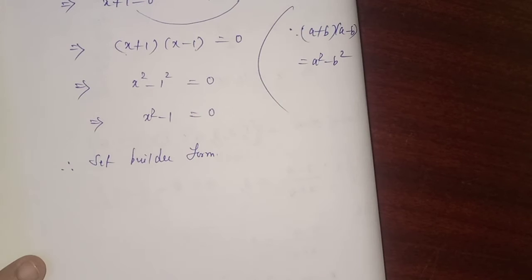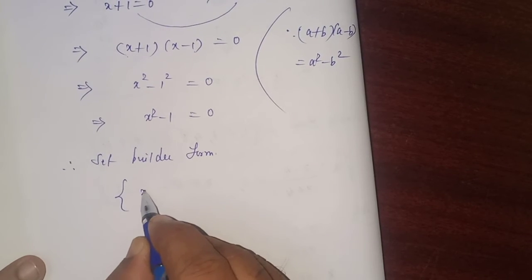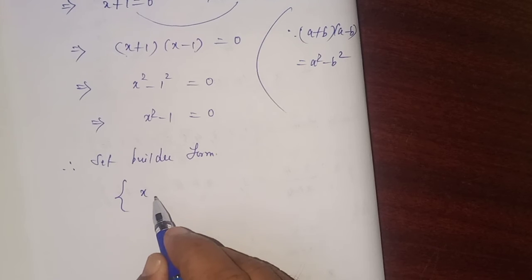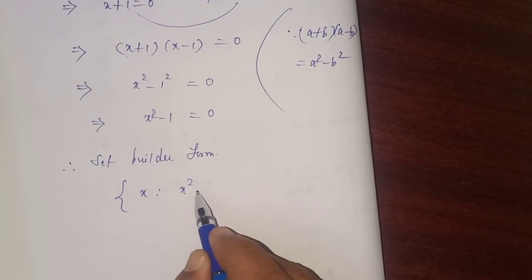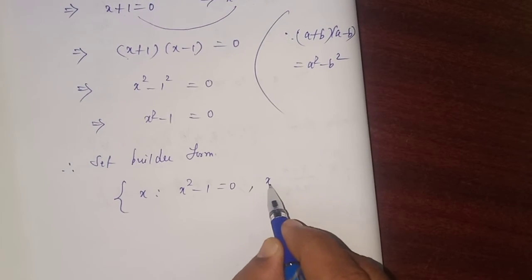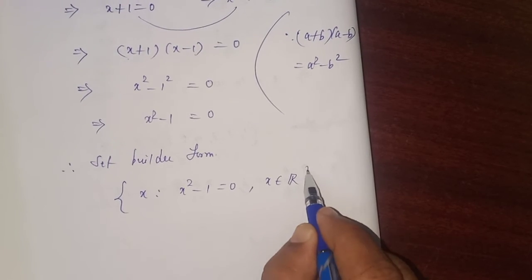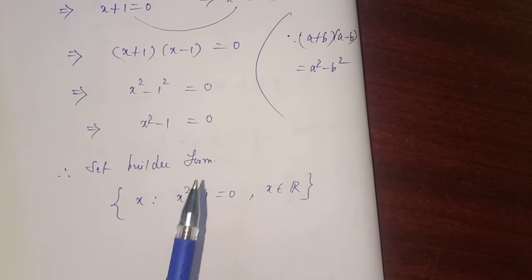So, set of all x such that x² - 1 = 0 and x belongs to the set of all real numbers. This is a representation of the set in set builder form.